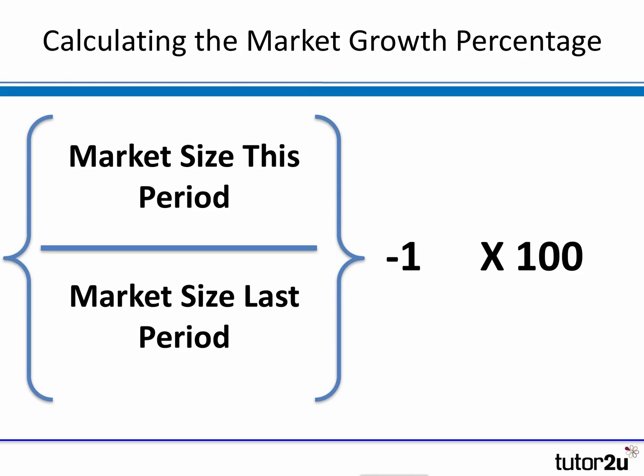Calculating the percentage is relatively straightforward, and there's a shortcut that will always give you the right answer. Simply compare the two values: take the market size now, divide it by the market size in the previous period over which you wish to measure growth — so market size this year compared with last year. Divide one by the other, take away one, and multiply by 100. That gives you the correct market growth rate.